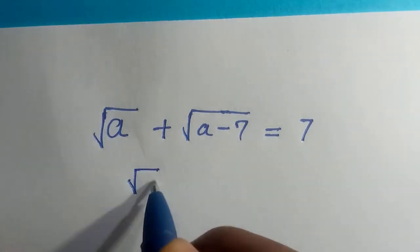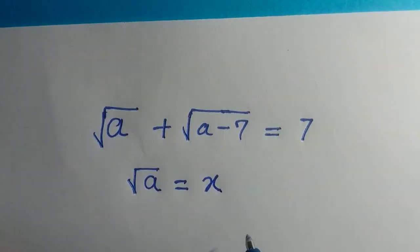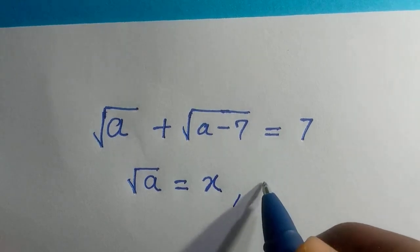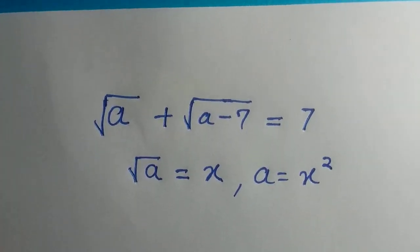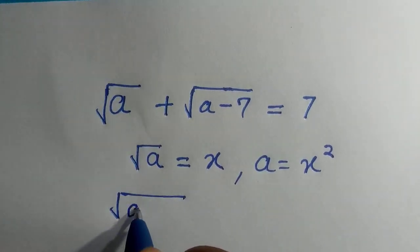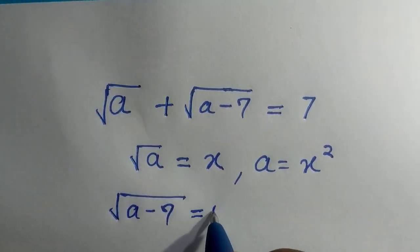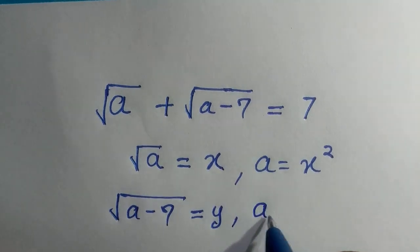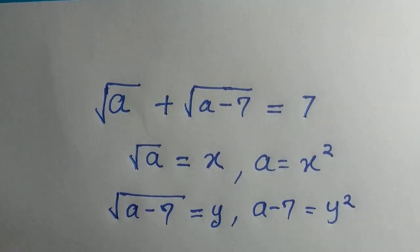Suppose I let √a = x. That is, we have a = x². And if I let √(a-7) = y, therefore we have a - 7 = y².